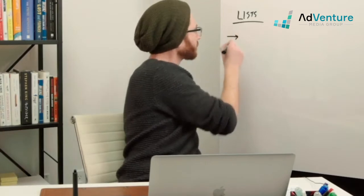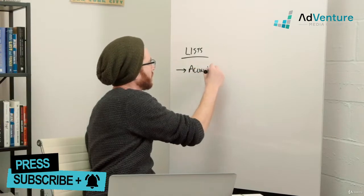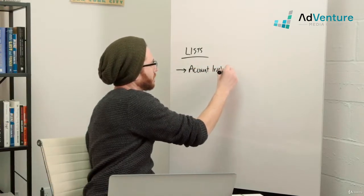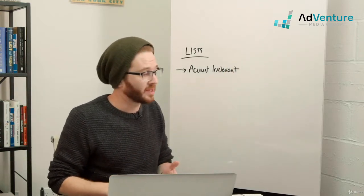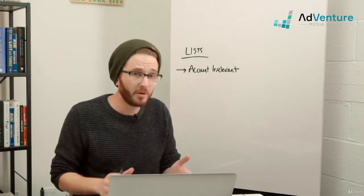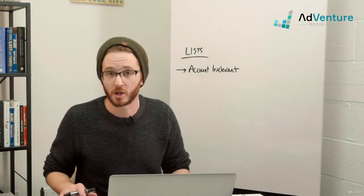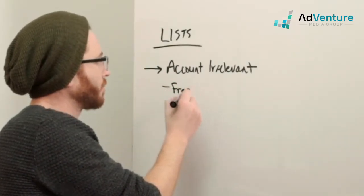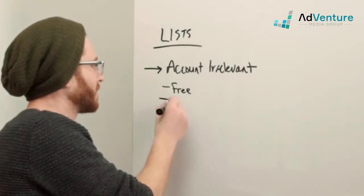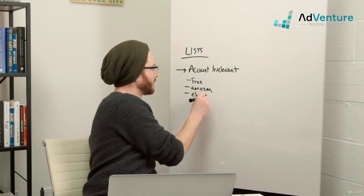The most popular form of list that I suggest you create right away is what I call an account irrelevant list. Your account irrelevant negative keyword list is going to consist of negative keywords that you never want to show up for. For example, things like 'free,' 'Amazon,' 'eBook,' or 'downloads.'